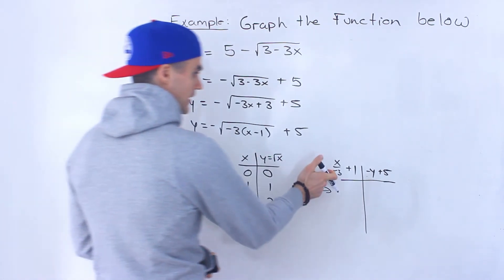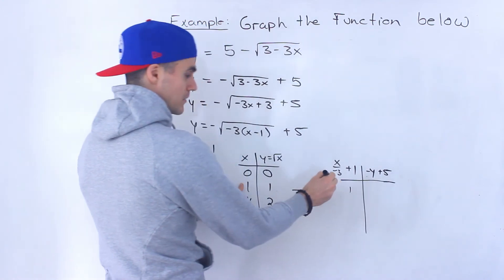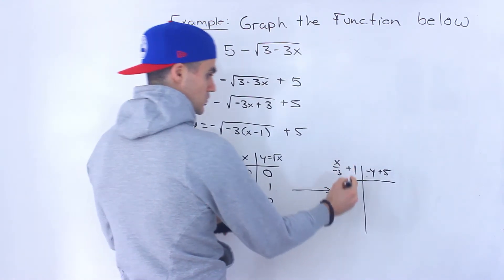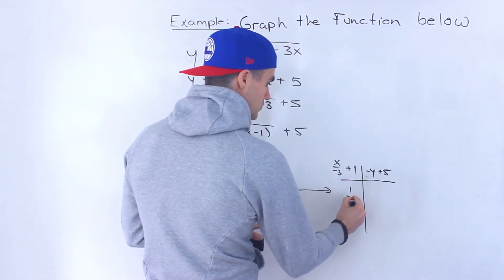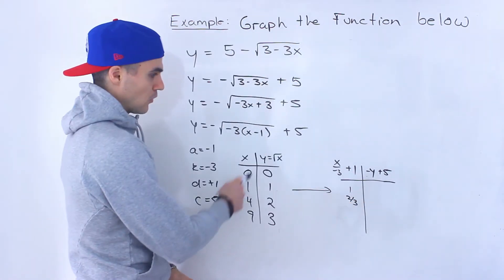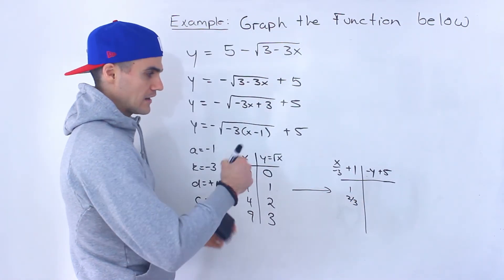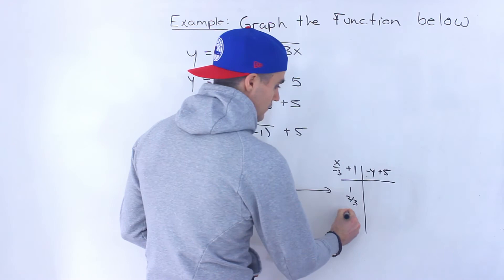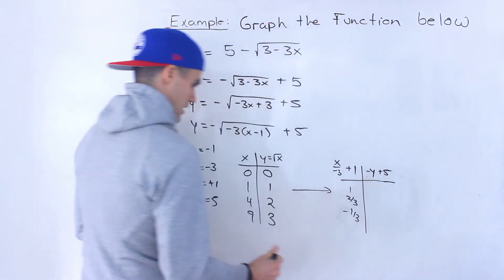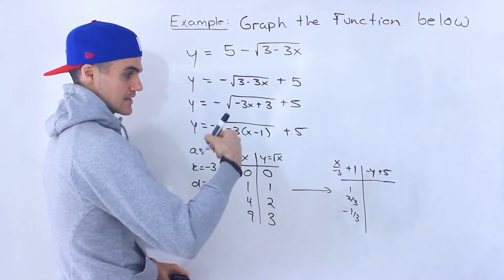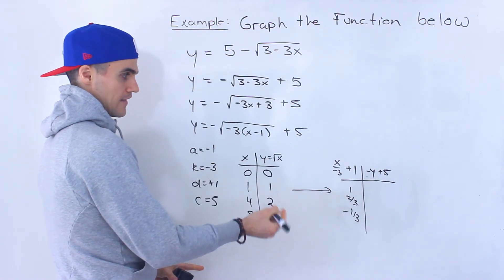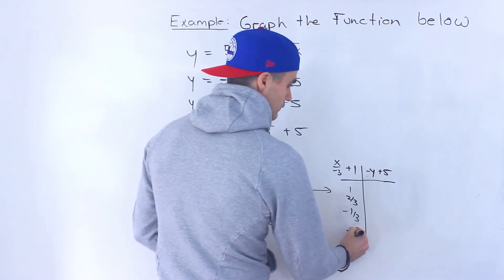So notice, 0 divided by negative 3 plus 1, that would give us 1. 1 divided by negative 3 plus 1 would give us 2 over 3. And then 4 divided by negative 3 would be negative 4 over 3, and then plus 1 would give us negative 2.